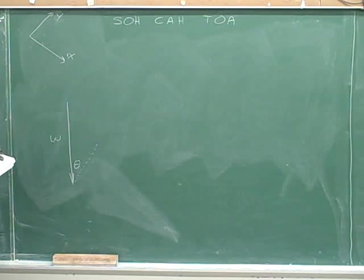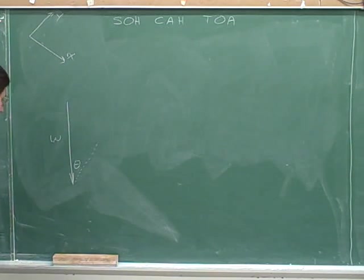So, if we're going to break this into components, we've got to draw that right triangle to show the components. Well, we're going to use this as the hypotenuse. The overall vector is the hypotenuse, and we need to draw legs that are parallel to the axes.